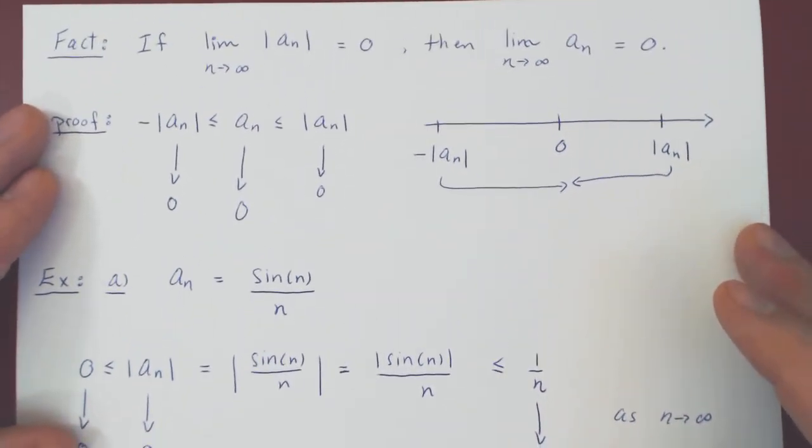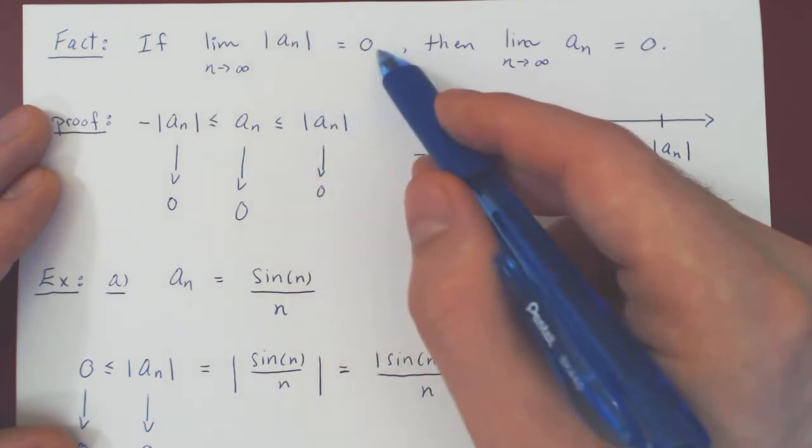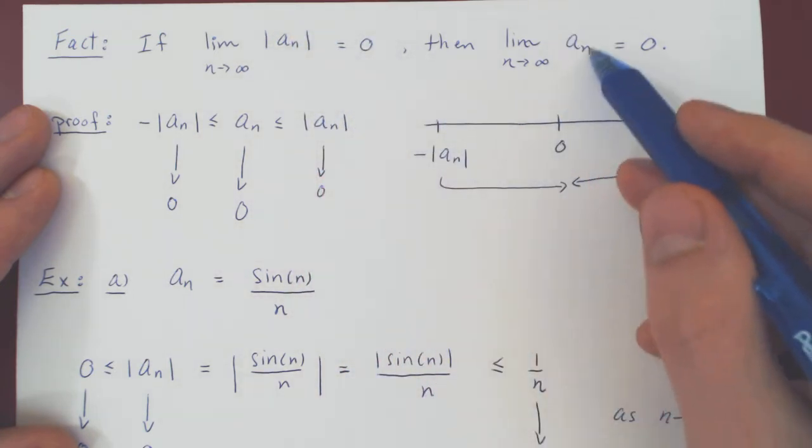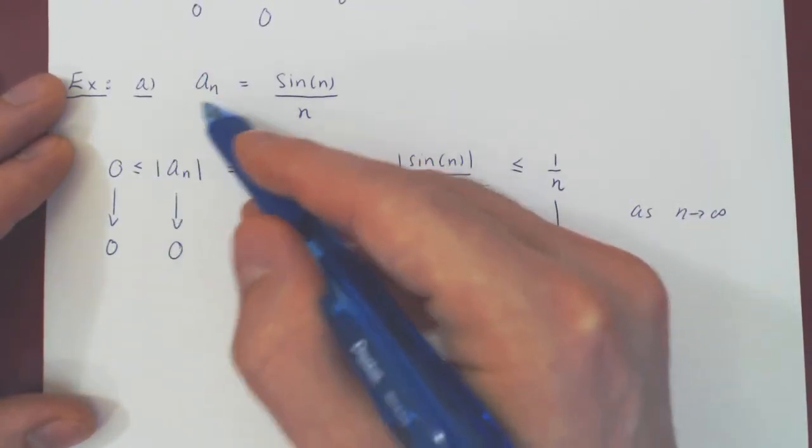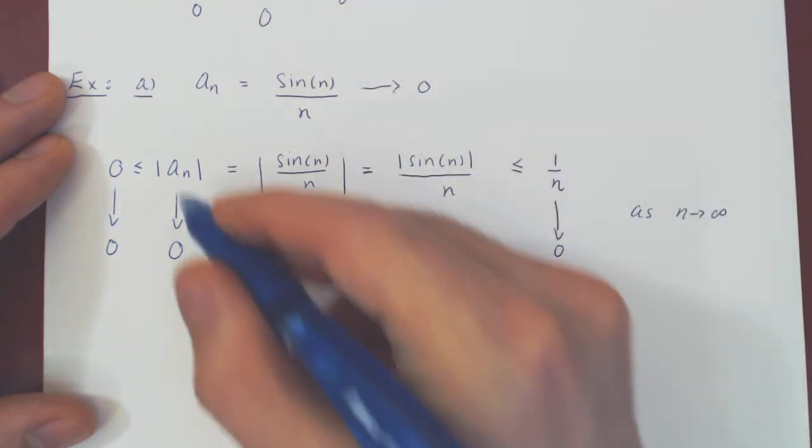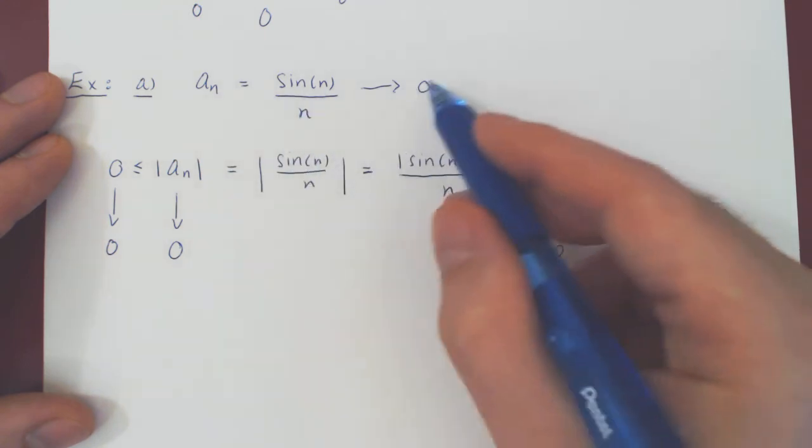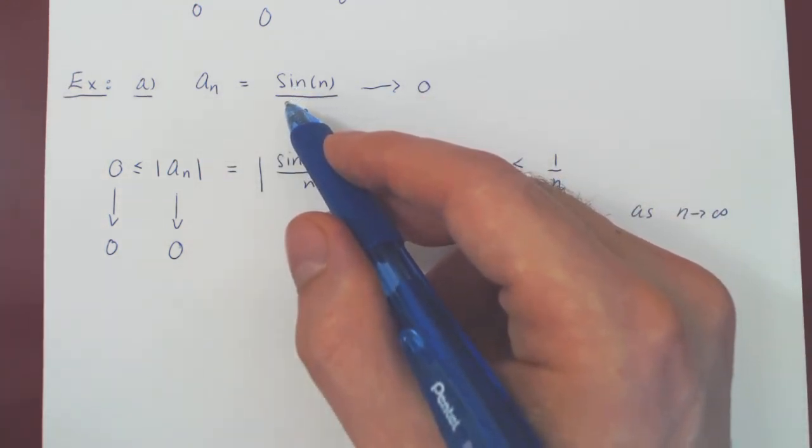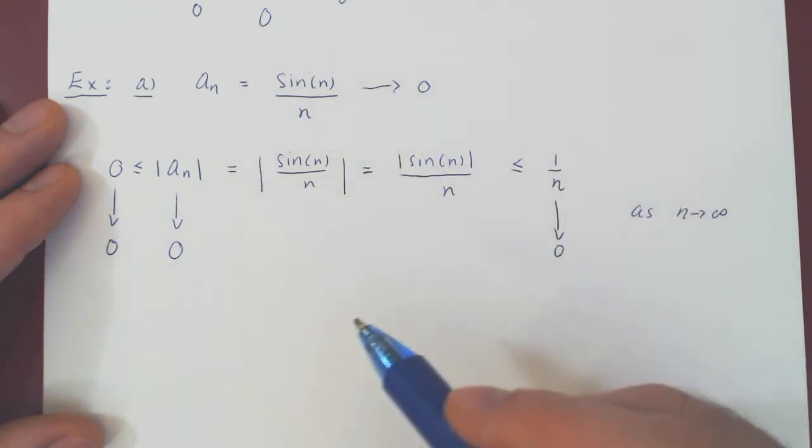And so a_n in the absolute value gets squeezed between 0 and 0. Therefore, by the squeeze theorem, in the absolute value, a_n converges to 0 as well. But, and we can quote this result, if the absolute value of a_n converges to 0, so does a_n without the absolute value. So a_n being sine of n over n also converges to 0 as its absolute value converges to 0. So indeed, as n gets bigger and bigger, sine of n over n will be shrinking to 0.